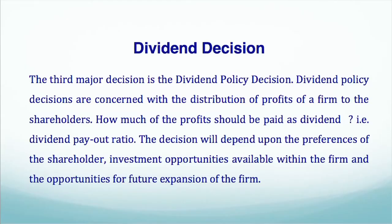The third major decision is the dividend policy decision. Dividend policy decisions are concerned with the distribution of profits of a firm to the shareholders. How much of the profits should be paid as dividend — that is the dividend payout ratio. The decision will depend upon the preference of the shareholders, investment opportunities available within the firm, and opportunities for future expansion of the firm.